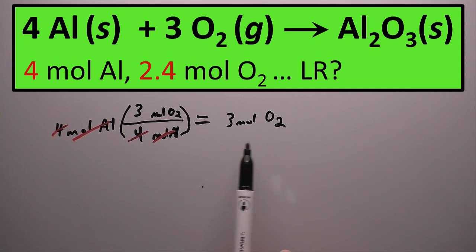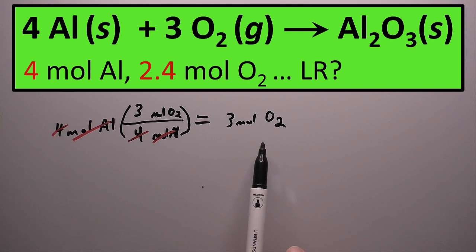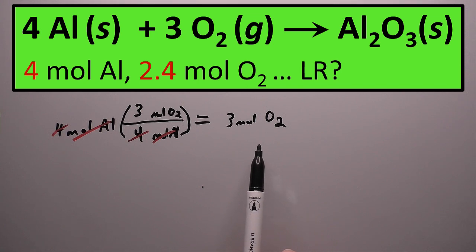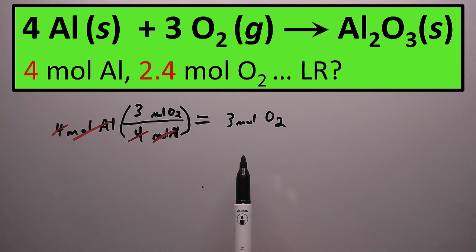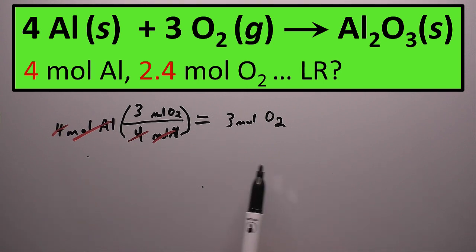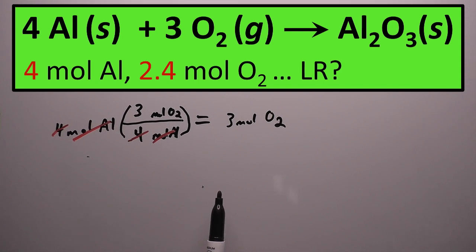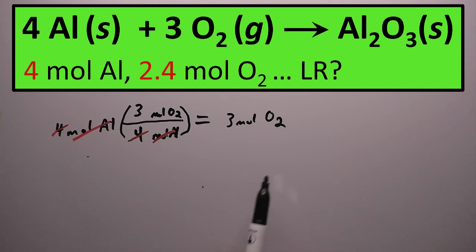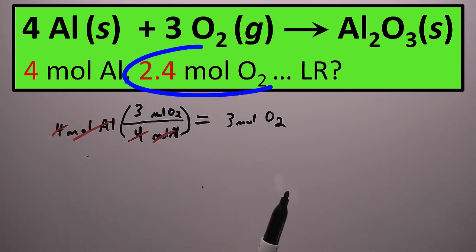Now that we know how much oxygen is required to react with all of our aluminum, we need to compare this value to how much oxygen we actually have. The problem tells us we start out with 2.4 moles of oxygen. Since 2.4 moles of oxygen is less than the 3 moles required, we don't have enough oxygen to react with all of our aluminum. Therefore, oxygen is the limiting reagent.